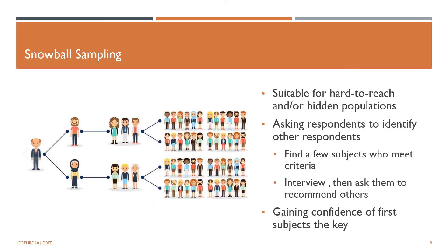Some populations that we are interested in can be hard to reach. These include populations such as drug addicts, homeless people, individuals with AIDS or HIV, prostitutes, and so forth. Such populations can be hard to reach or hidden because they exhibit some kind of social stigma, illicit or illegal behaviours, or other traits that make them atypical or socially marginalised. Snowball sampling is a non-probability sampling technique that can be used to gain access to such populations.